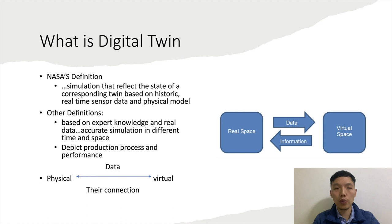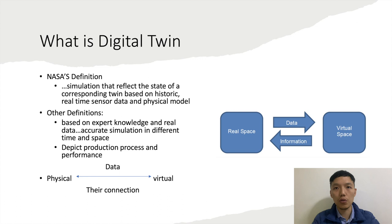For the digital twin, synchronization with real-time real-world data is very important because DT models are not perfect models. If it keeps running without synchronization with real data, it could really deviate from the real condition. Also, the system that the digital twin is trying to model does not need to be a tangible system — it could be a cyber system, a cyber-physical system, or an intangible system.